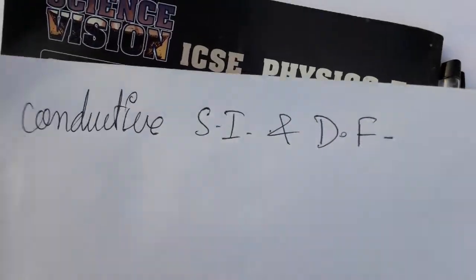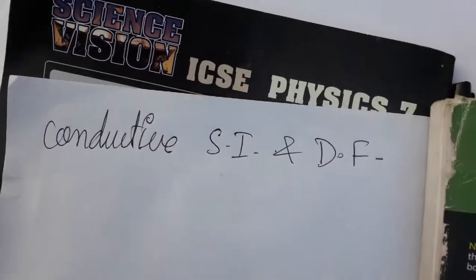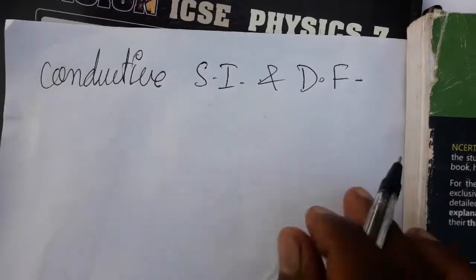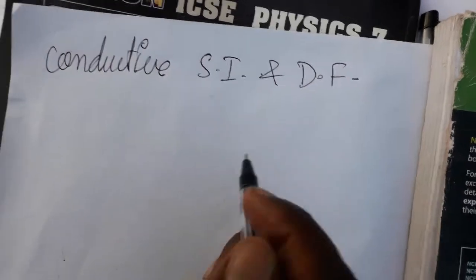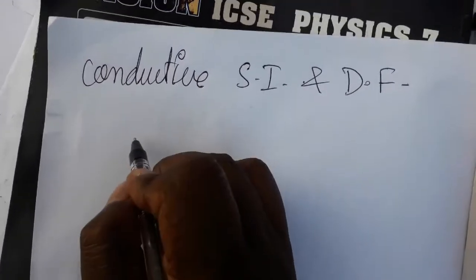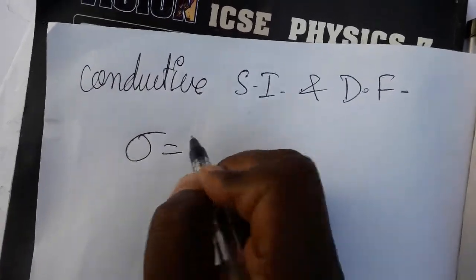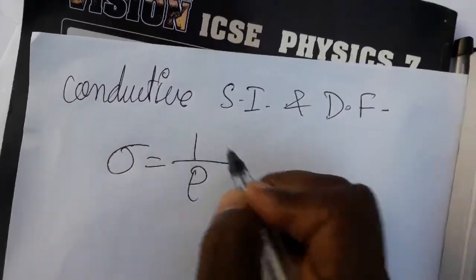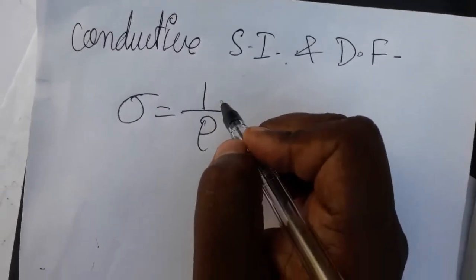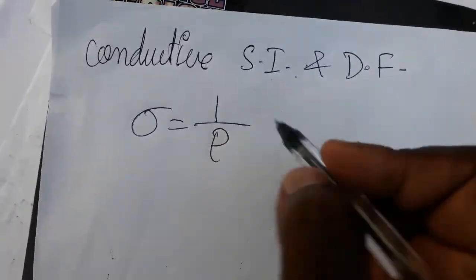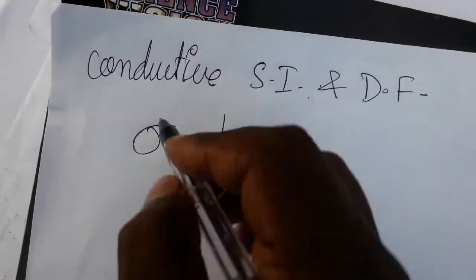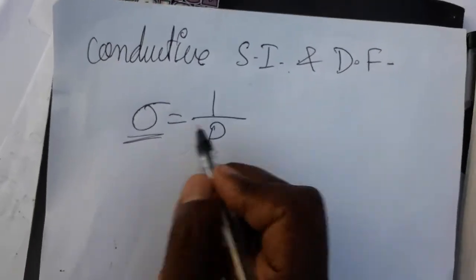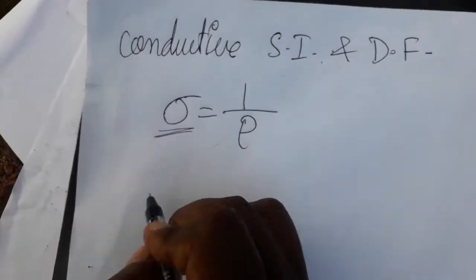Hello friends, in this video we are going to learn what is the SI unit and dimensional formula for conductivity. Conductivity sigma is 1 by resistivity. Conductivity is inversely proportional to resistivity. First you should know resistivity, then only you can calculate what is conductivity.